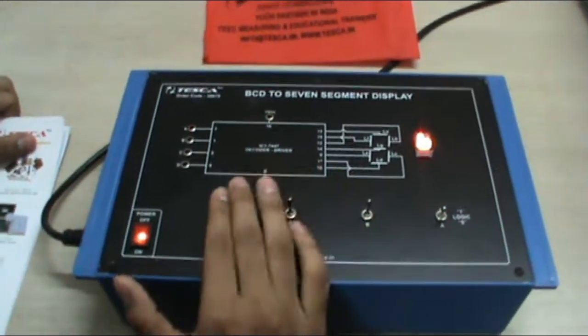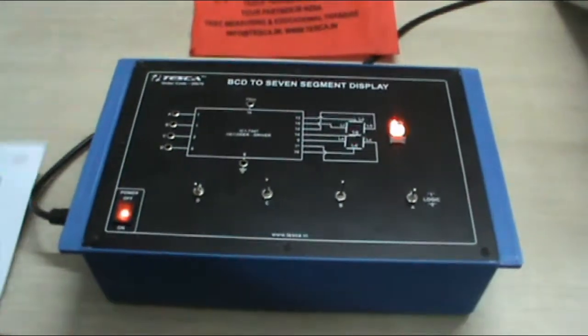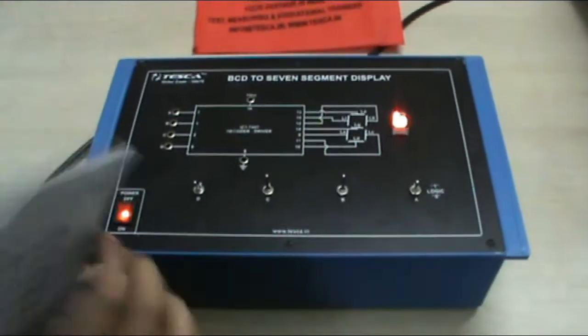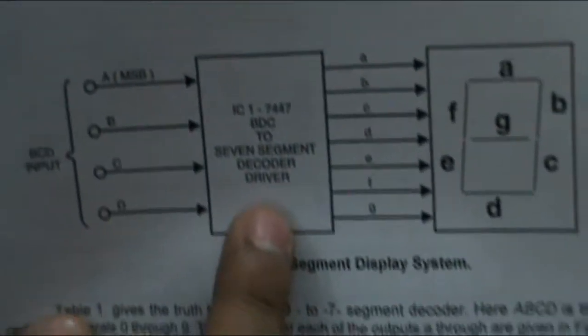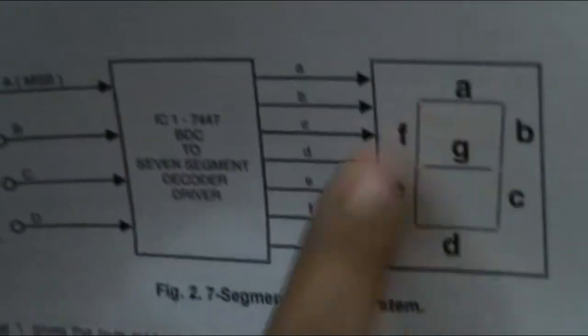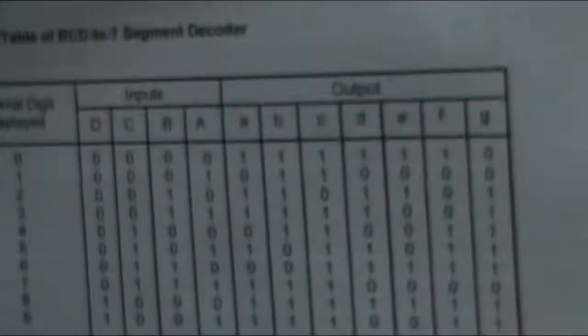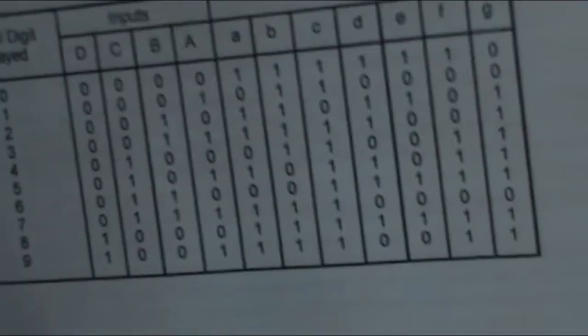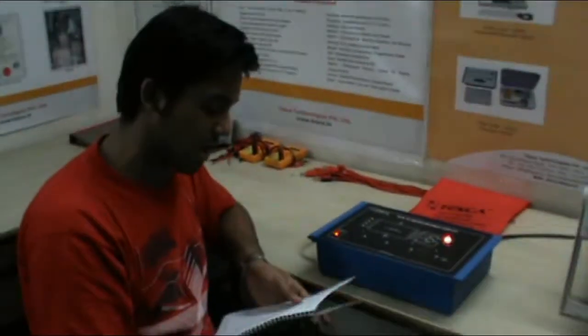This shows how BCD from 0 to 9 can be shown on the 7 segment display. The same circuit is also shown in the manual, in which the 4 inputs go into the IC and the 7 outputs of the 7 segment display are varied. This is the table that shows the variation from 0 to 9 with the inputs and outputs. For any further information please consult the lab manual. Thank you.